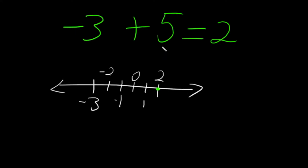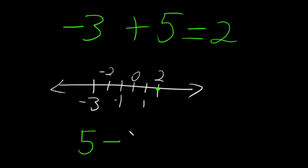It's also worth mentioning that you are allowed to switch the order of the two numbers as long as you keep their signs with them. We had a plus 5, so we could move the 5 in front and say this is equivalent to 5, and then the negative 3 becomes minus 3. And as we know, 5 minus 3 gives us the same result: 2.